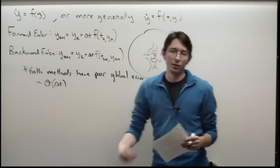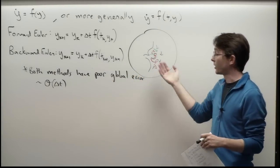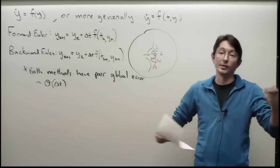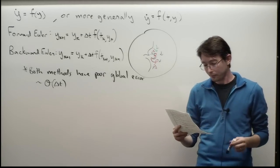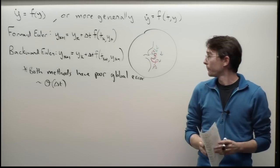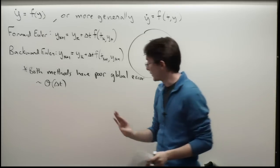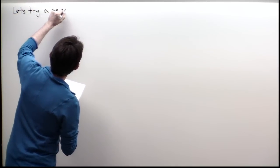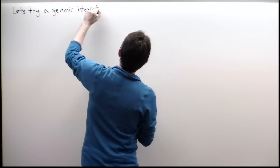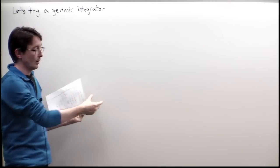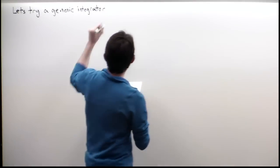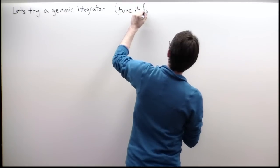Both methods had poor global error properties. So what I'd like to do is cook up a method that has higher order accuracy. In principle, I should be able to do this just using Taylor expansions and some basic math. We're going to derive a generic integrator — one with undetermined coefficients, which I consider knobs I can turn to make it better or worse at integrating. We're going to tune it for small error.